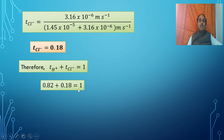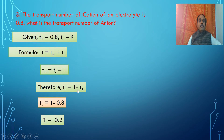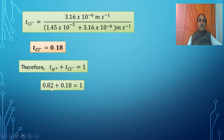The sum of these two transport numbers equals 1. This is the basic relation: the sum of the transport numbers of all ions in an electrolyte must equal 1.